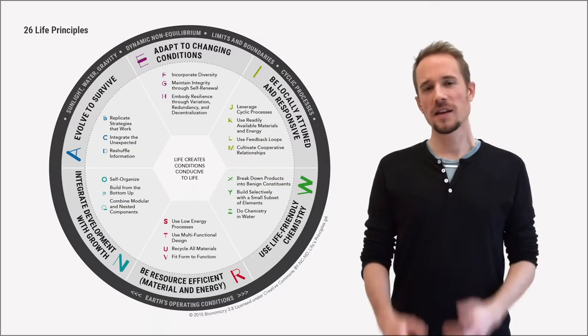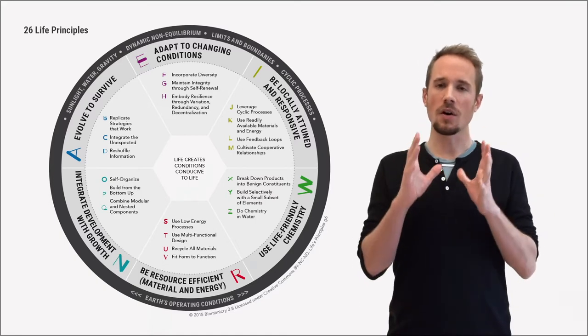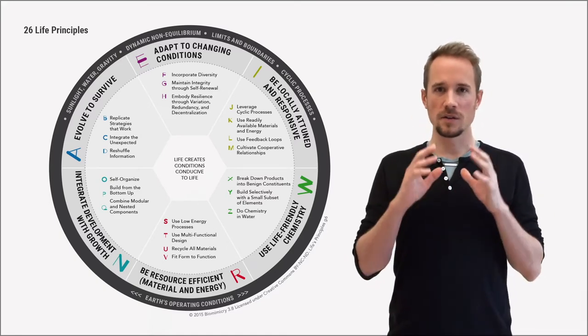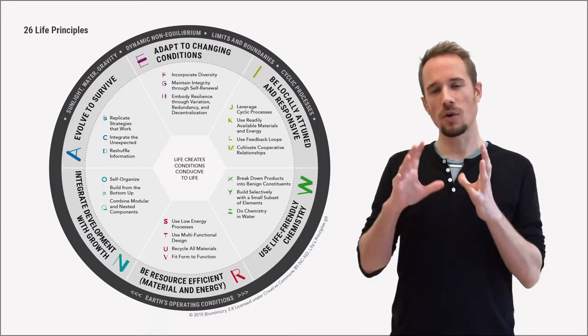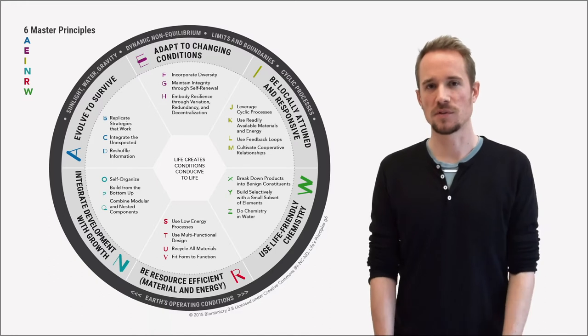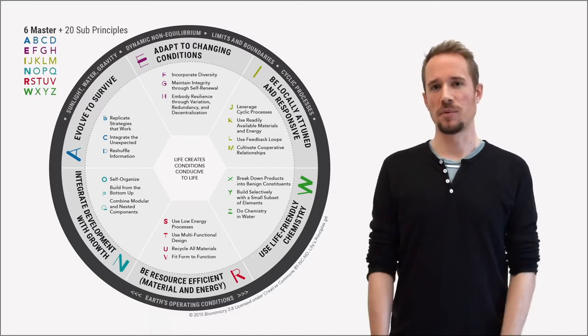Hi, welcome to our video series about biomimicry life principles. Life principles are design lessons from nature and they can be found in all life on earth. For each of the 26 principles we will show you an example in the ecosystem of a tree. Just like in nature, life principles are all interconnected. To help us understand them, they are organized into six master principles and 20 sub-principles.